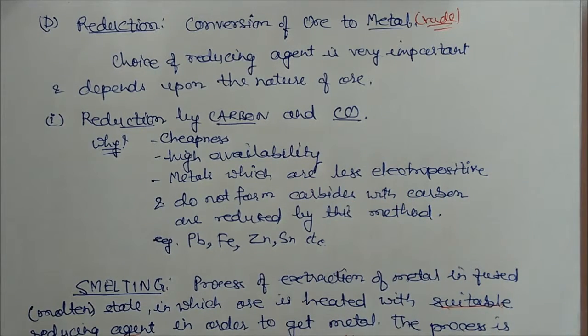Now here we will see one method smelting in which how carbon is utilized to reduce the metal. So what is smelting? It is a process of extraction of metal in fused or molten state in which ores are heated with suitable reagent in order to get metal.